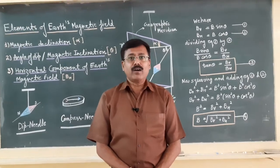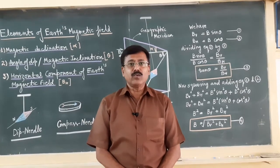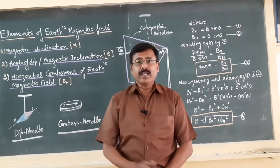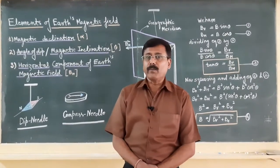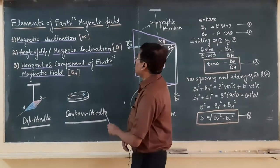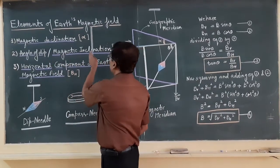We know the concept of earth magnetism, that earth has its own magnetic field. But for knowing the intensity of the magnetic field due to the earth, we should know about earth's magnetic elements. So there are certain elements for the earth's magnetic field.